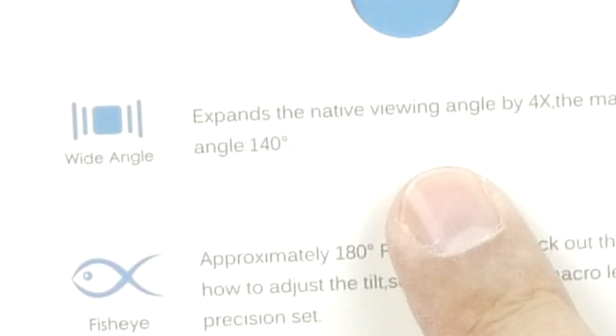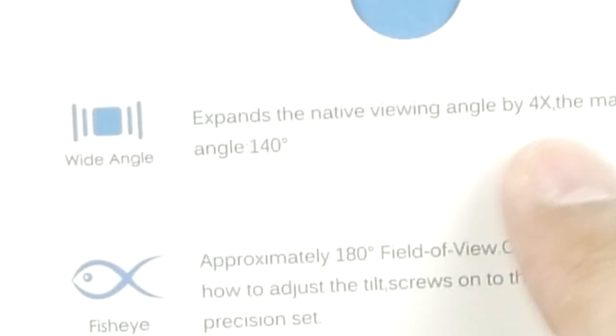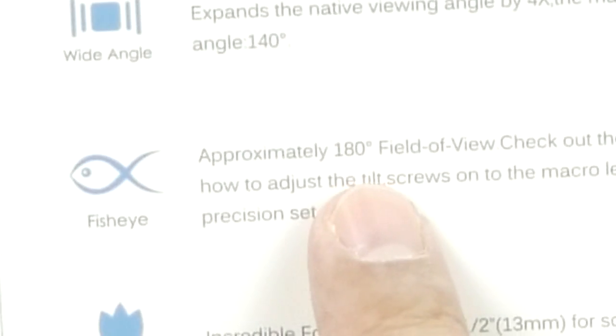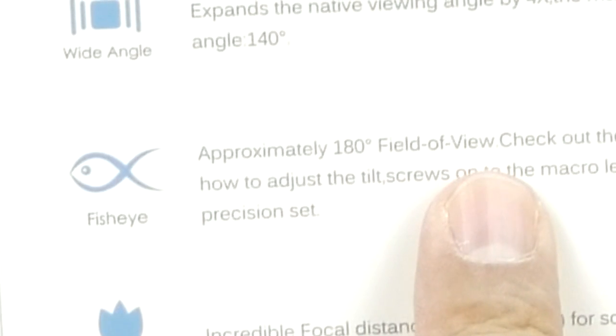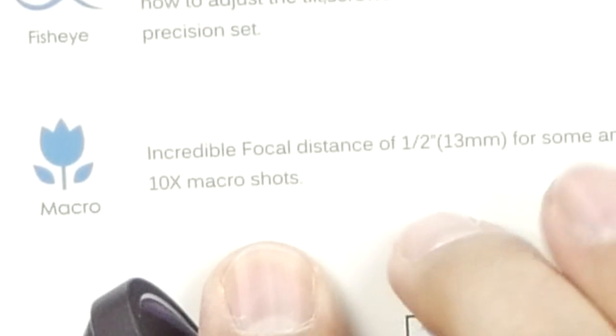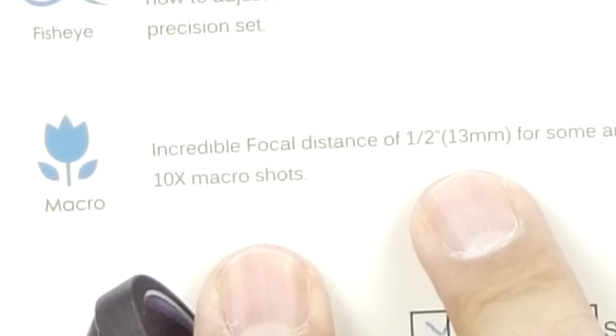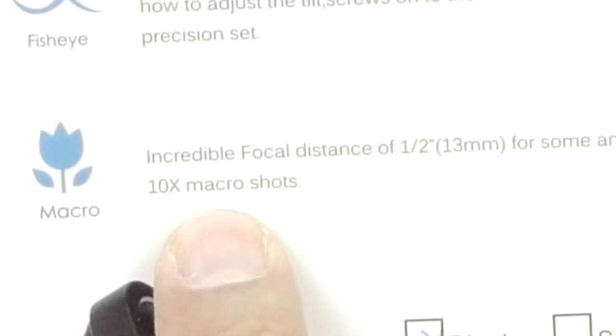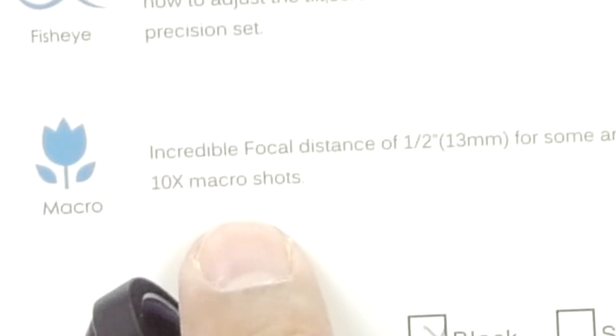Let's see, expands the native viewing angle by four times. Approximately 180 degrees field of view for the fisheye. And then the macro is focus distance 33 millimeters. Holy cow. Ten times macro shots. So that's going to be really fun.